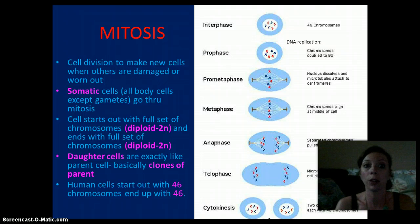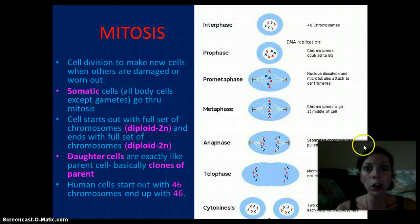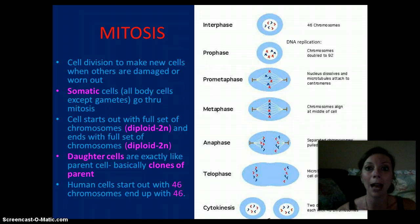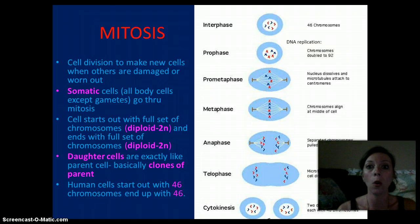Human cells start out with 46 chromosomes, and after cell division, we end up with 46 chromosomes in our body cells or somatic cells. So mitosis occurs in multiple phases. The first is interphase — normal cell growth and preparation for cell division. During S phase, the chromosomes are going to duplicate, so they prepare for cell division.